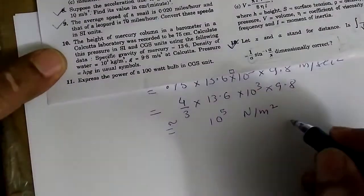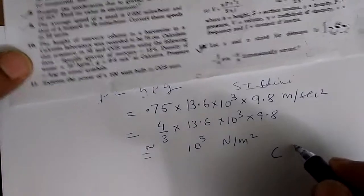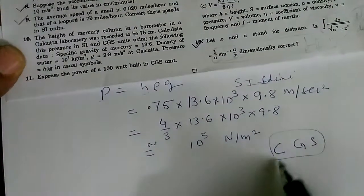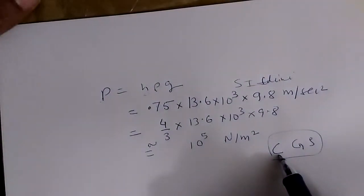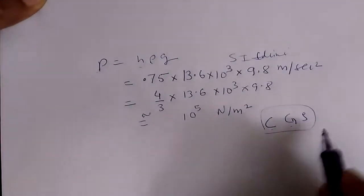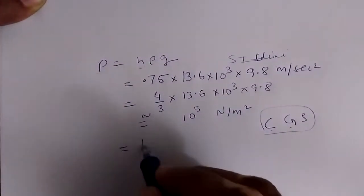So CGS means centimeter, gram, second. So the CGS unit wants to measure all the distances into centimeter, and weight into gram, and second time into second.